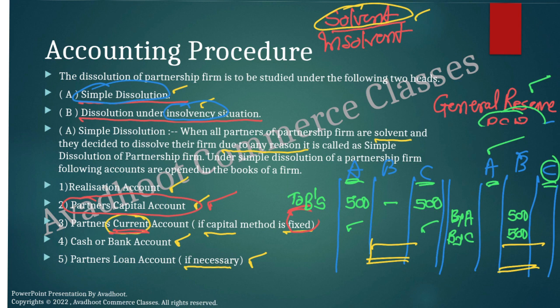Sometimes journal entries are also asked. Keep in mind that students always forget the journal entry for general reserve. Your entry will be: general reserve account debit to partner's capital account — meaning to Mr. A's capital account, Mr. B's capital account, Mr. C's capital account in their PSR. By that way, distribution is done.